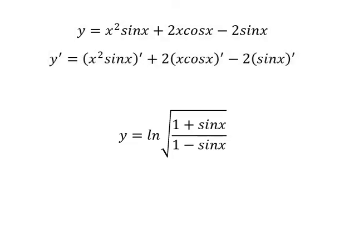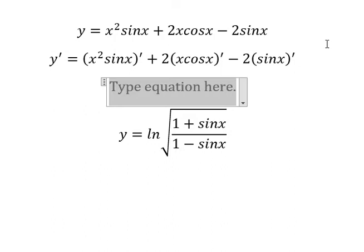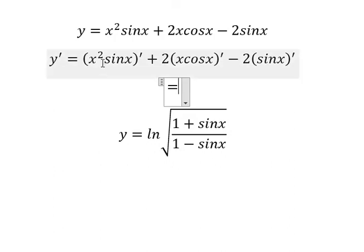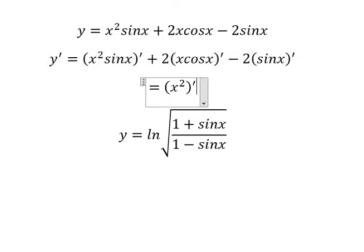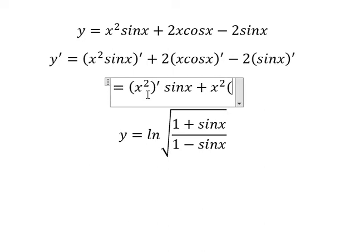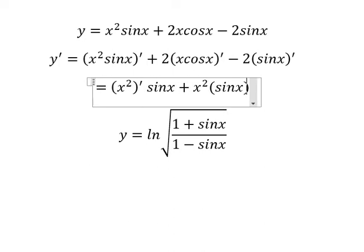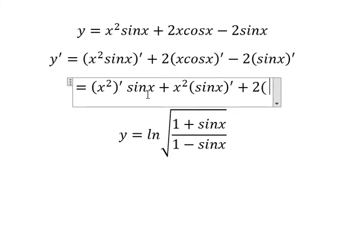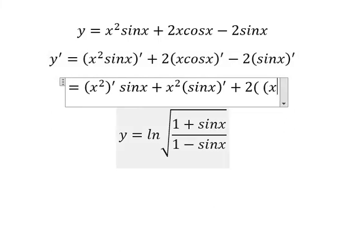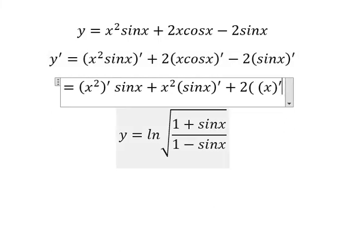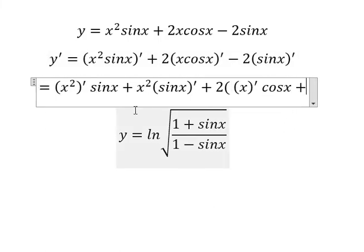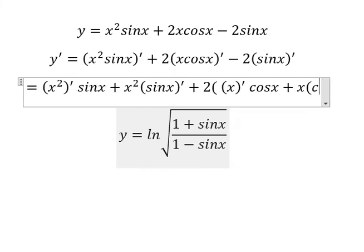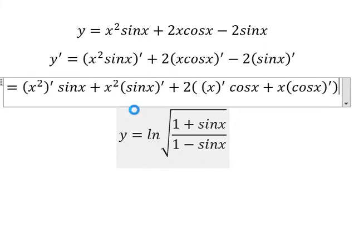We apply the product rule of derivatives. We need to do the first derivative of x multiplied by sine x, and then the first derivative of sine x. Then we do the first derivative of x multiplied by cosine x, and then the first derivative of cosine x.